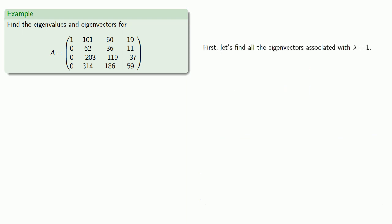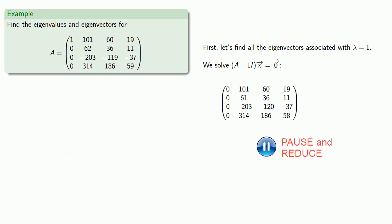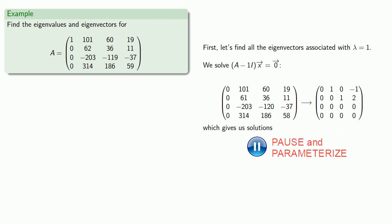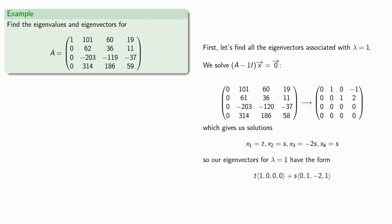And so let's find all eigenvectors associated with lambda equal to 1. So we'll solve (A - I)x equals 0. So row reducing our coefficient matrix, we have solutions. And since we have two free variables, our eigenvectors for lambda equal to 1 have the form.